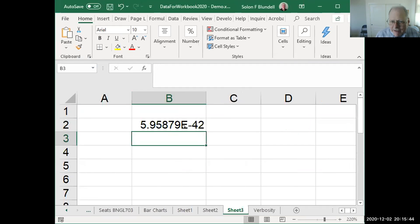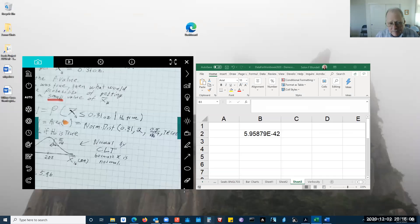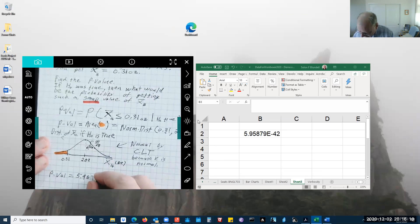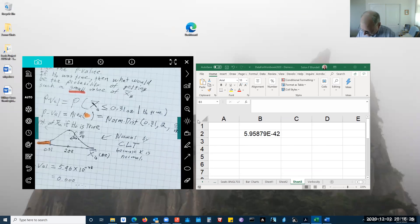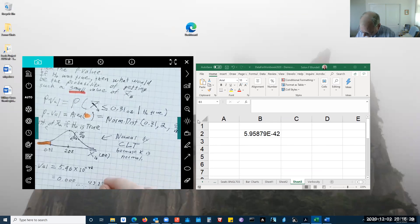Well, you notice that E right there—this is scientific notation here. So that's a really small number. So my p-value is 5.96 times 10 to the negative 42nd power. That's 0.000—okay, you've got 42 zeros. That 5 is in the 42nd decimal place.